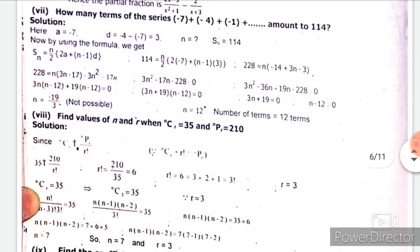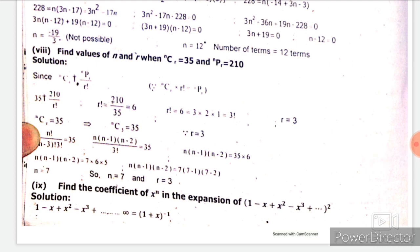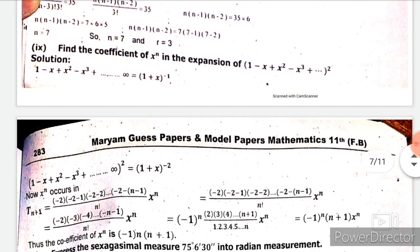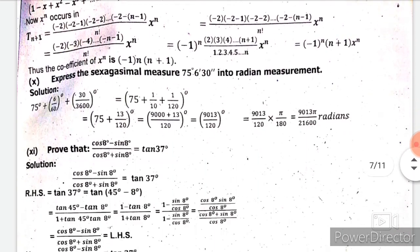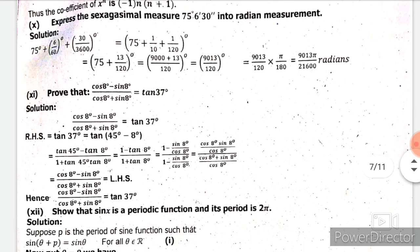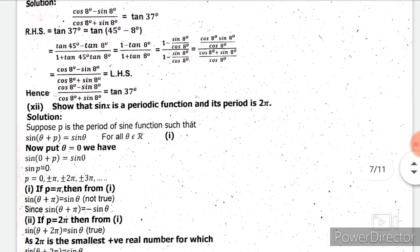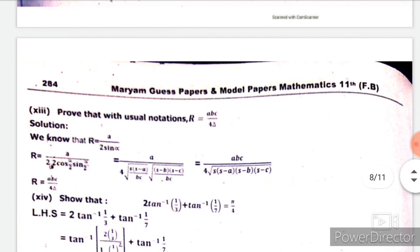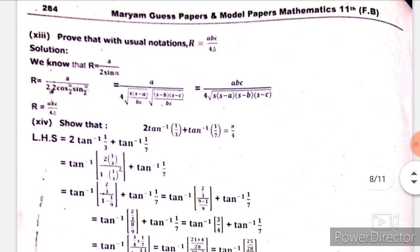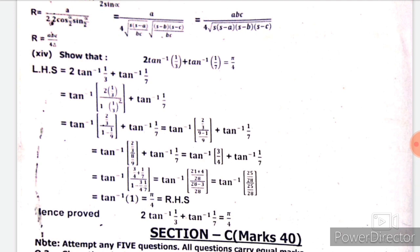Continuing Section B: part eight is from Chapter 7, part nine is from Chapter 8, part ten is from Chapter 9, part eleven is from Chapter 10, part twelve is from Chapter 11, part thirteen is from Chapter 12, and part fourteen is from Chapter 14. This covers all the short question answers of the 2016 past paper.